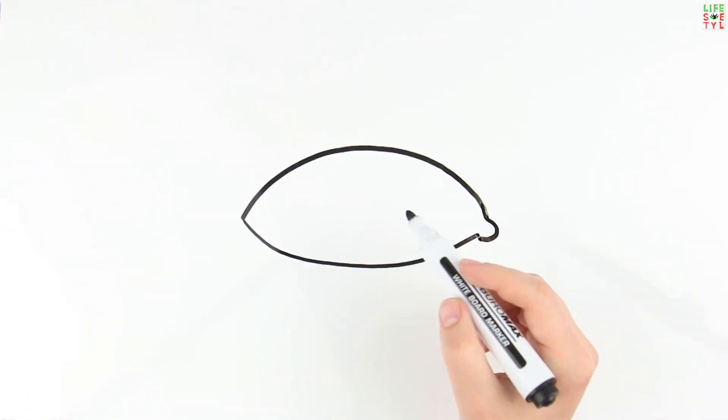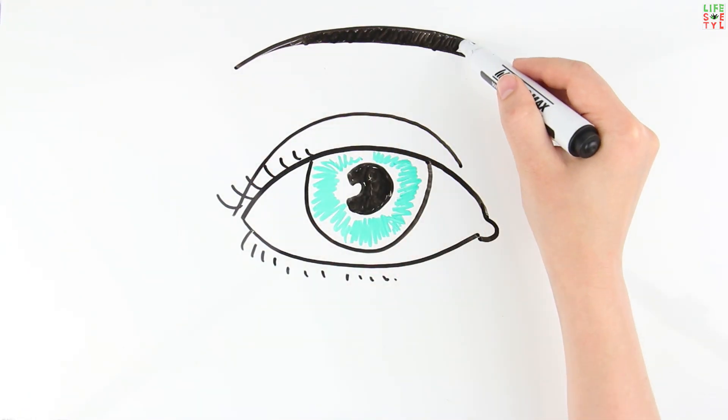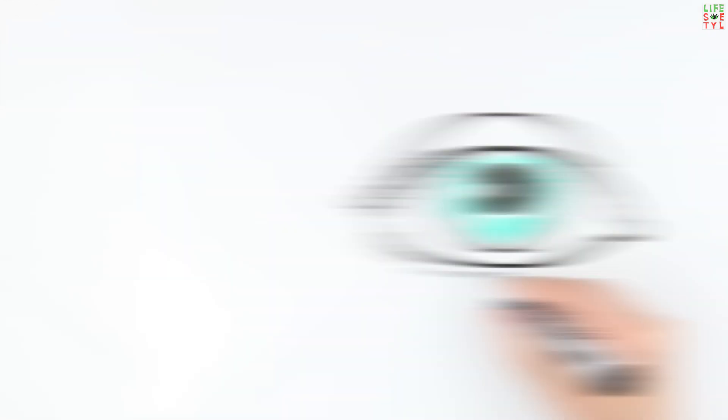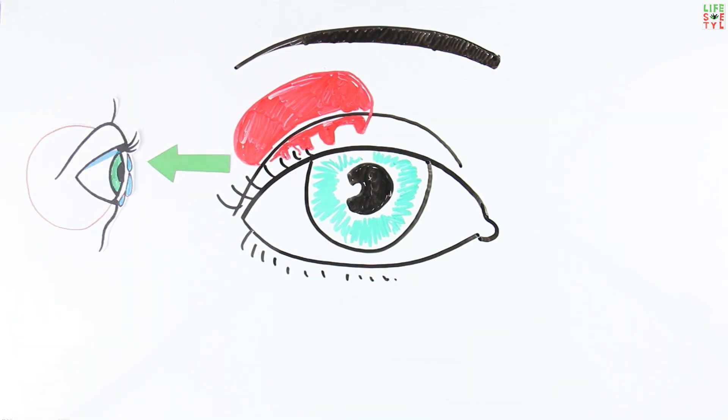The tear factor is located in the lacrimal glands in the upper eyelids of the eyes. Part of the resulting tear fluid is used to lubricate the eyeball.